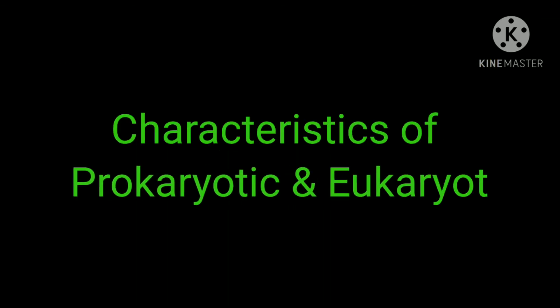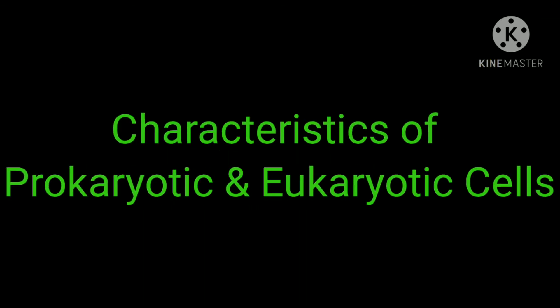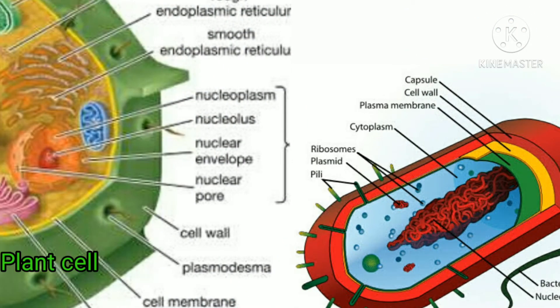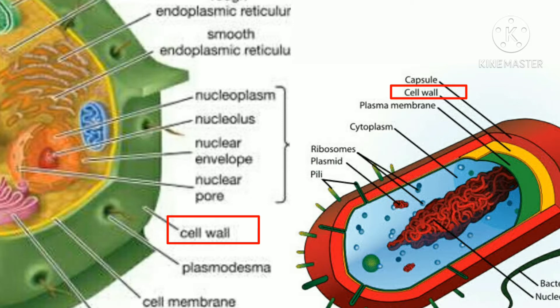Characteristics of prokaryotic and eukaryotic cells — Cell wall. Both types of cells may be surrounded by a rigid non-living cell wall that protects the delicate life form within. Although the cell walls of prokaryotes and eukaryotes may have similar functions, their chemical composition is very different.